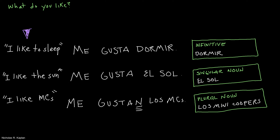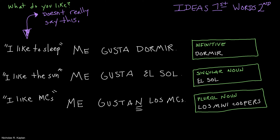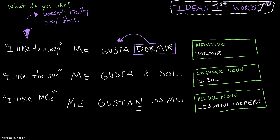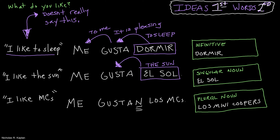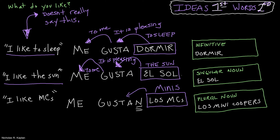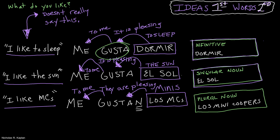The first thing is, this doesn't actually say 'I like and then the rest.' We read it backwards. We have to think in ideas first and words second. This is one of the troubles when you're learning a second language — you can't always directly bring it back to your first language. So me gusta dormir actually says 'to sleep, it is pleasing to me' — I like to sleep. The sun, it is pleasing to me — I like the sun. Me gustan los mini coopers — mini coopers, they are pleasing to me. So if I am liking something and it's an infinitive or a singular noun: gusta. If it is a plural noun, like tacos or mini coopers, we're going to say gustan, with an N.